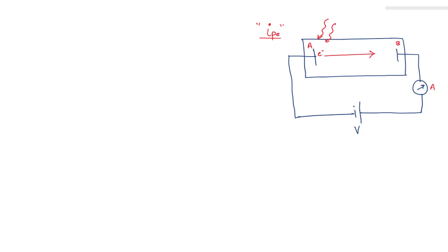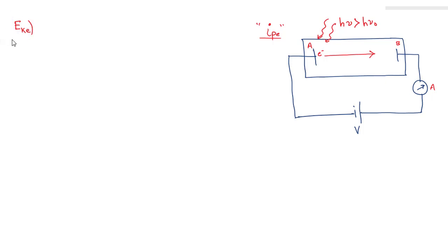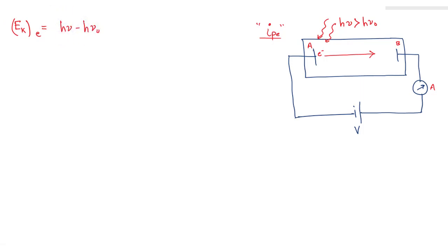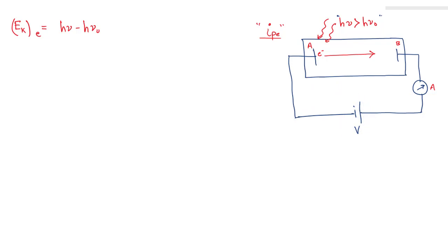If we have photons with energy hν greater than hν₀ (the work function), then the electron will have a kinetic energy equal to hν minus hν₀. Now, what is the role of the voltage source that we are applying in this setup?